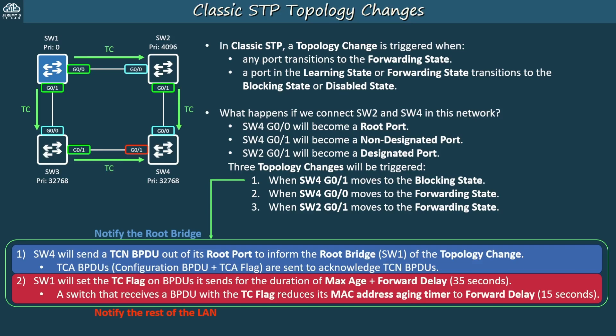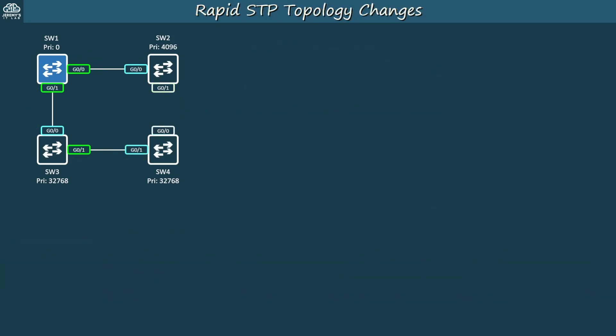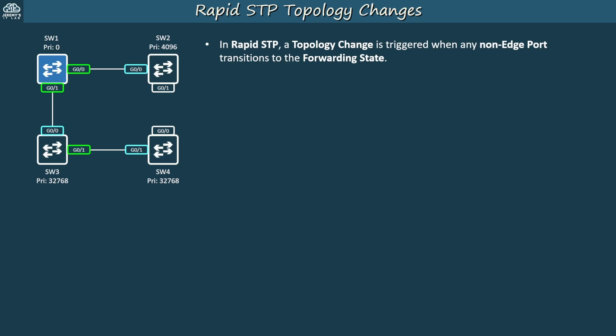Now let's look at the single-step process used by Rapid STP. In Rapid STP, a topology change is triggered when any non-edge port transitions to the forwarding state — that is the only time a topology change is triggered. There are two main differences from classic STP. First, activity on edge ports doesn't trigger topology changes, since edge ports don't affect the topology among switches. Second, a port going down and moving to the discarding state doesn't trigger a topology change. It is only triggered when a port enters the forwarding state, meaning there is a new active path in the LAN.